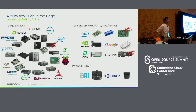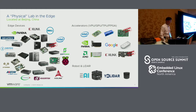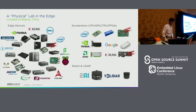As you know, VMware is a software company — we do a lot of software and most of the team works on software only. But our team in Beijing is kind of a special team. We have a physical lab for the edge. A lot of devices you can find on the screen — we got those either by ourselves or through contributions from our partners, including some components for machine learning accelerators. We also have some robot-based stuff.